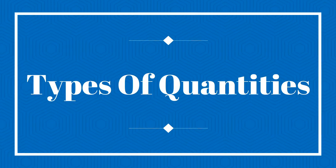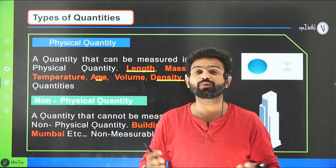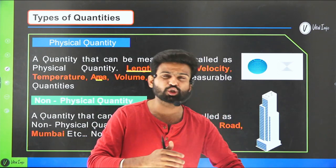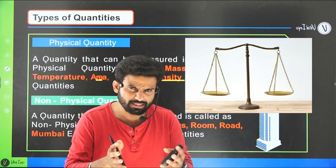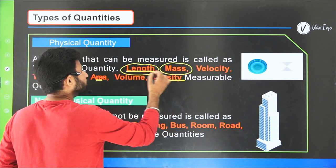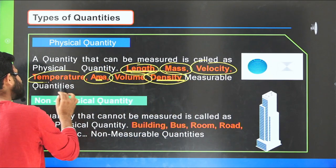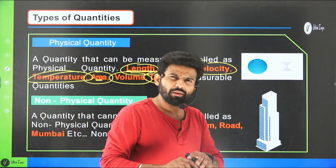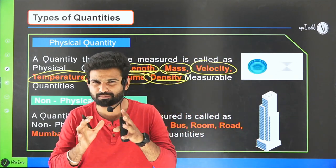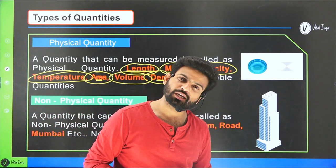In physics, there are two types of quantities: physical quantities and non-physical quantities. Physical quantities are the quantities that can be measured. For example, mass, length, velocity, density, volume, area, and temperature — all measurable quantities are called physical quantities.